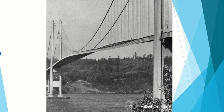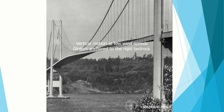During the building phase and after the opening of the bridge on the 1st of July 1940, the bridge experienced vertical waves — the bridge deck vibrated even at small wind speeds. This was not the case for other suspension bridges like the Golden Gate Bridge. To prevent excessive vertical waves, several measures were taken: the girders were anchored to the rigid bedrock at both sides, inclined hangers were used between the bridge deck and the main cables, and hydraulic dampers were applied.